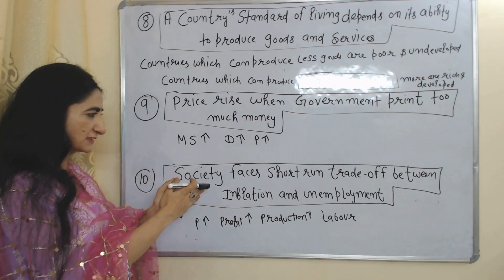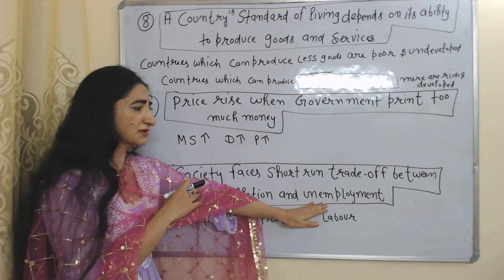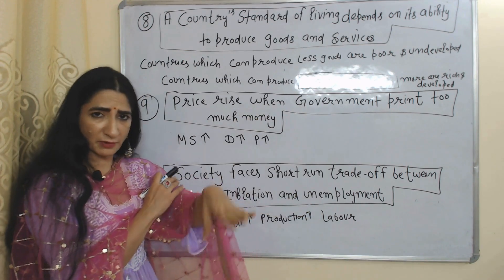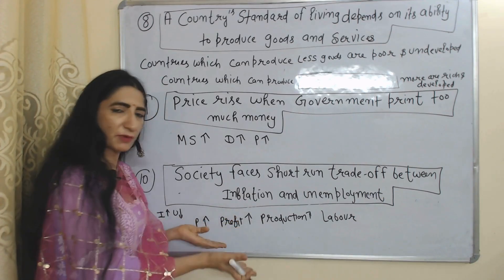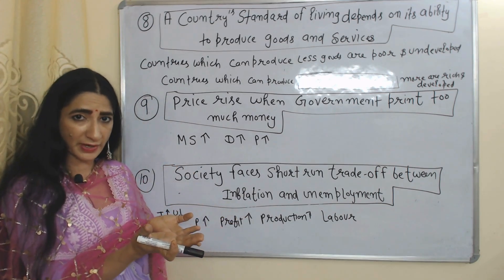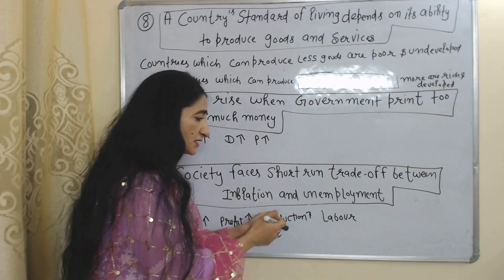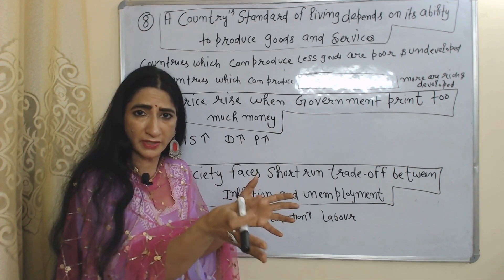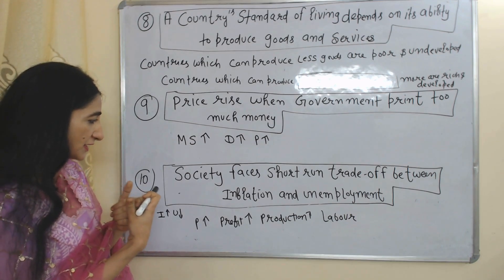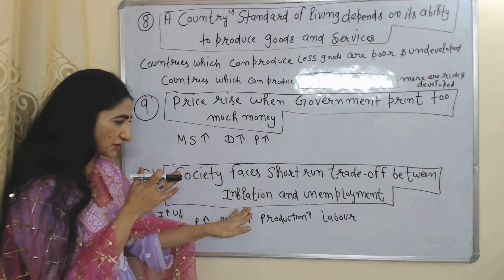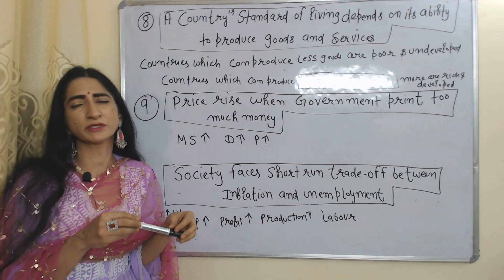The last principle is society faces a short-run trade-off between inflation and unemployment. At the short-run time period, inflation and unemployment have an inverse relation — when inflation increases, unemployment will fall. When prices are increasing, that means profit of producers is increasing because they can sell their goods at a higher price, which motivates them to produce more. As production increases, employers will hire more and more employees, meaning unemployment will reduce. So inflation and unemployment have an inverse relation in the short run. That is all about the 10 principles of economics — thank you so much for watching this video. Bye, take care.